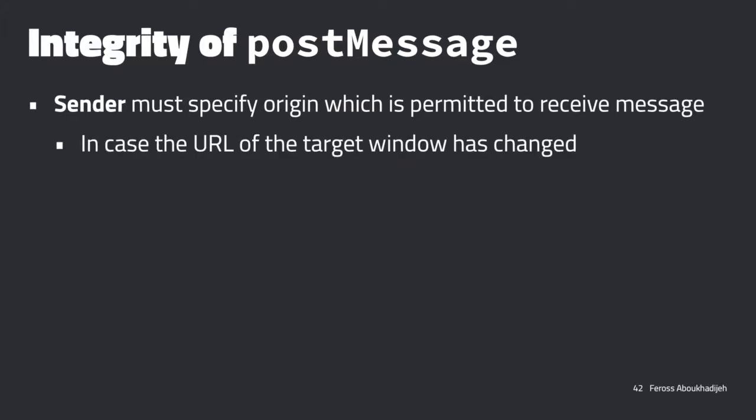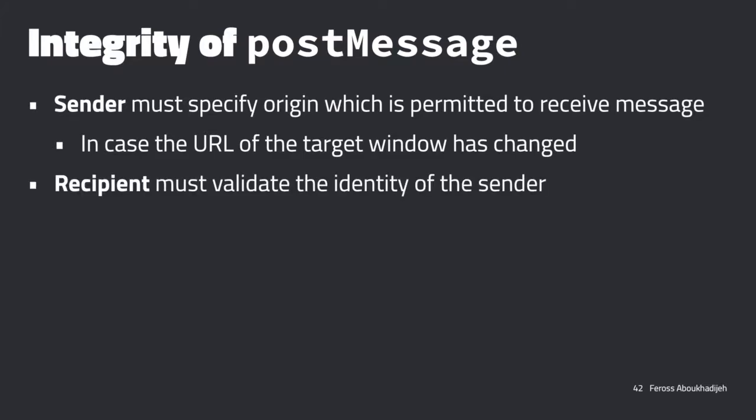That's how we get integrity from postMessage. The sender specifies the origin that they want to permit to receive the message. It's also possible that the window has changed in the meantime - some other script on the page could have navigated that frame elsewhere, so you might not want your message to go to wherever the frame happens to be pointing now. The recipient also validates the identity of the sender, which protects against some random window sending us a message. Just remember to always specify these things when using postMessage.